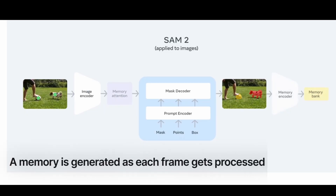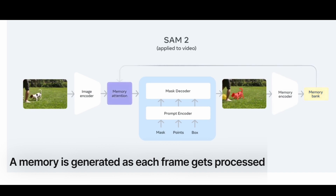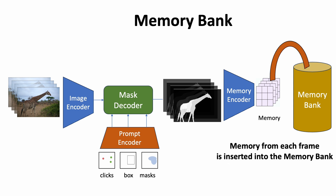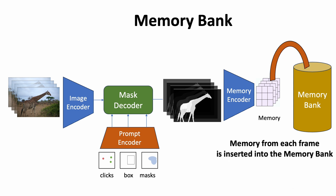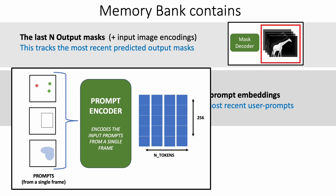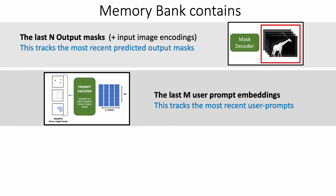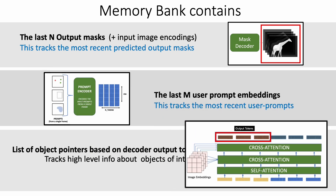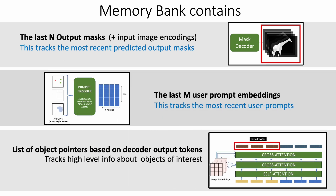Memories are generated as video frames are processed one by one. The most recent N memories are stored in a queue called the memory bank. The memory bank additionally stores the last M user-input prompts and the mask decoder output tokens for each frame, called object pointers, which capture high-level semantic information about the object to segment. In summary, the memory bank contains the last N segmentation outputs, the last M user input prompts, and those output token embeddings as object identifiers.